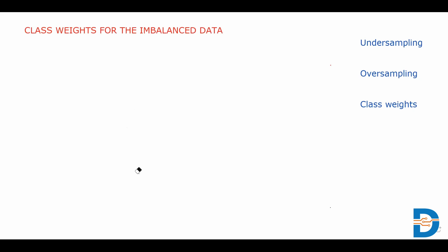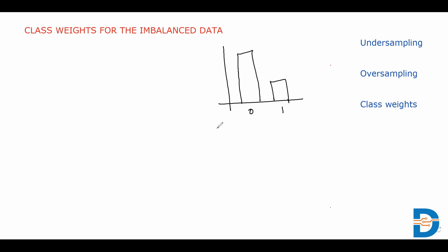In general, we call our data an imbalanced dataset when we deal with classification datasets where we have a different number of records or observations for each class. For example, if we have two classes — zero and one — and more records for zero and fewer records for one, then we call this an imbalanced dataset. The larger group is the majority class and the smaller group is the minority class.